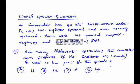A computer has 40-bit instruction code. It uses one register operand and one memory operand. There are 128 general purpose registers and 256 megabytes of RAM.